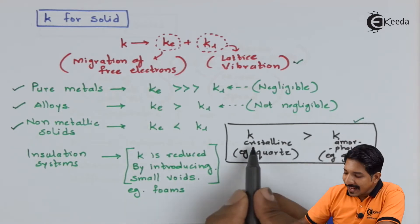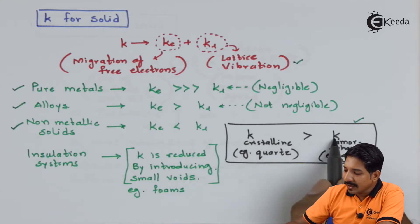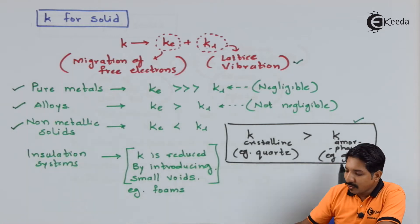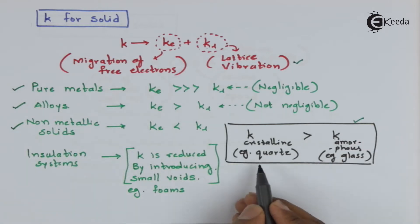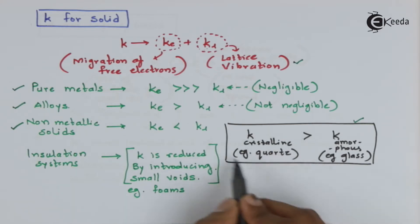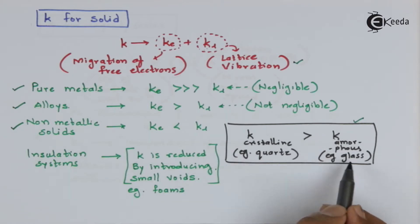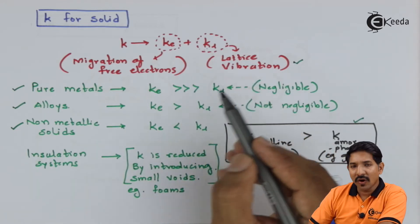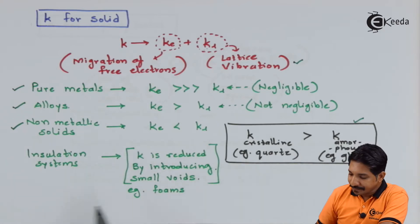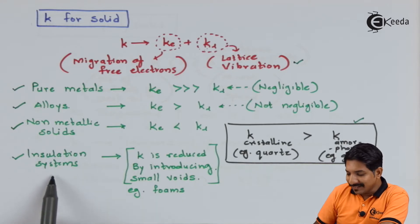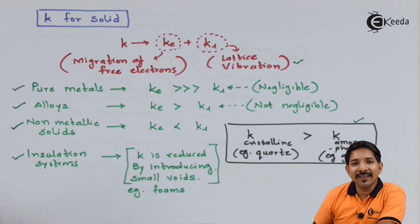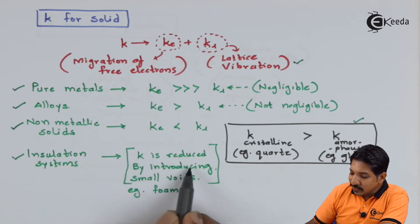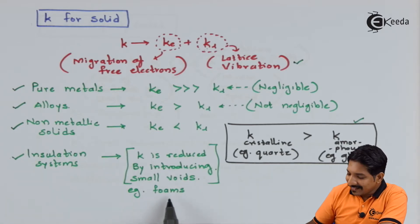To illustrate, comparing a crystalline material like quartz with an amorphous material like glass shows that quartz has much higher thermal conductivity than glass, since crystalline materials have a well-defined lattice structure while amorphous ones do not. Better lattice structure means better thermal conductivity. For insulation systems like foams, the thermal conductivity is reduced by introducing small voids filled with gas or air.